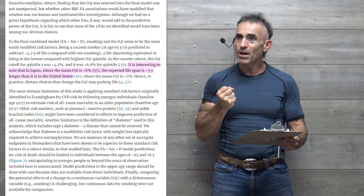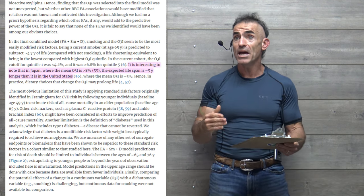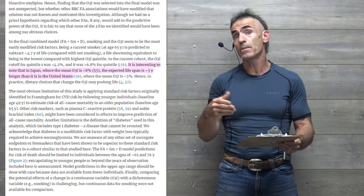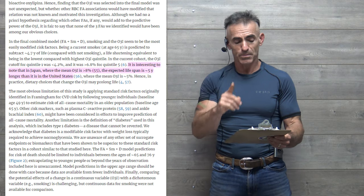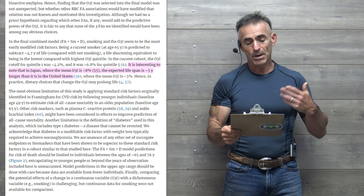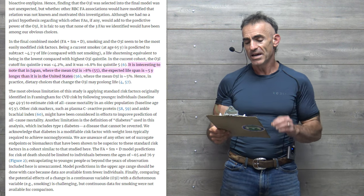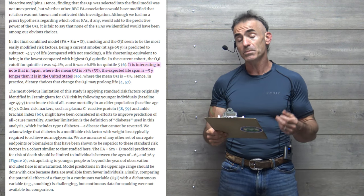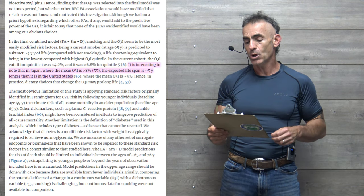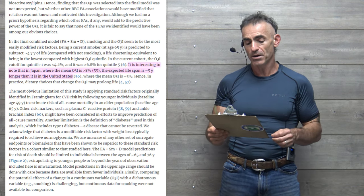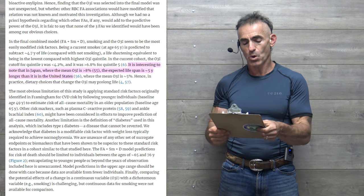To basically reflect on how it may impact or how you can make changes in your particular life or lifestyle to proceed. In the final combined model, we move forward. Being a current smoker at age 65 years is predicted to subtract approximately 4.7 years of life compared with not smoking.